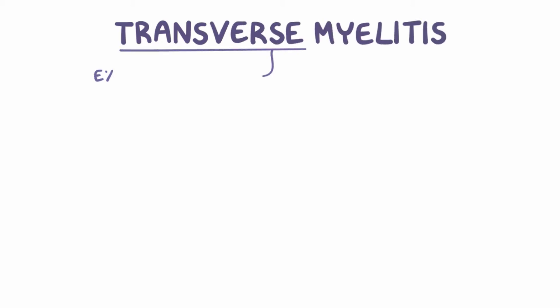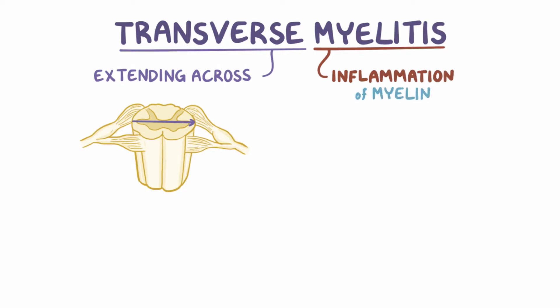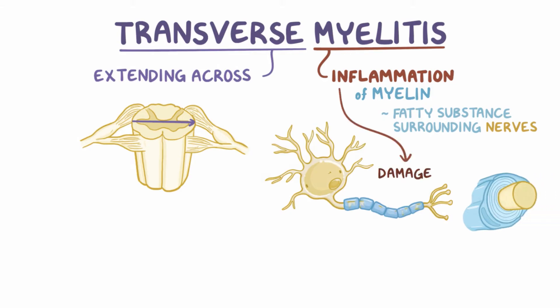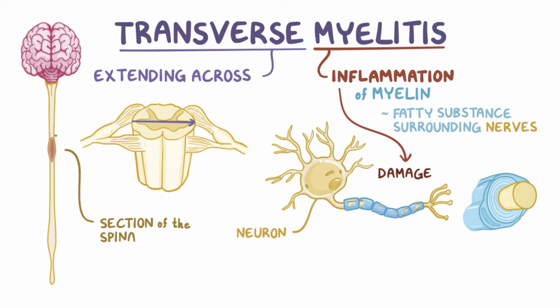The name of the disorder, transverse myelitis, can be broken down. Transverse means extending completely across something — in this case it refers to going across the spinal cord — and myelitis means inflammation of myelin, which is a fatty substance surrounding nerves. So in transverse myelitis, there's inflammation that damages the myelin as well as the rest of the neuron across a section of the spinal cord.